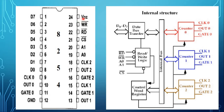Pin number 24 acts as the +5 volt power supply. The 8254 is a 24-pin DIP IC chip requiring a +5 volt power supply. The data bus buffer is a tri-state bidirectional 8-bit buffer connected to the data bus of the microprocessor. Data is transmitted or received by the buffer upon execution of IN and OUT instructions by the microprocessor.